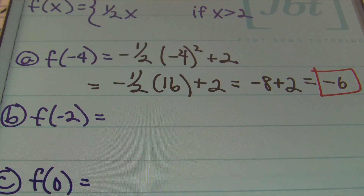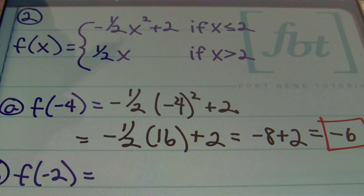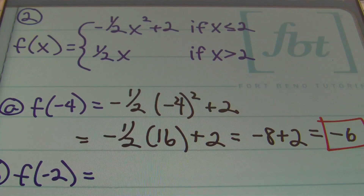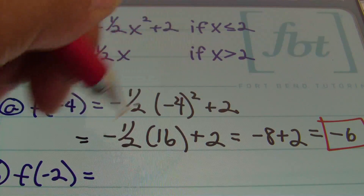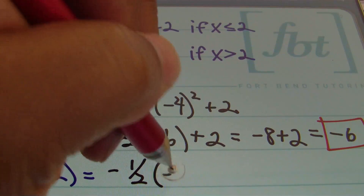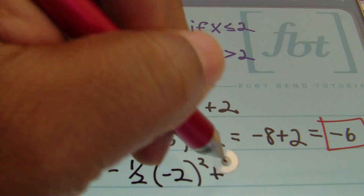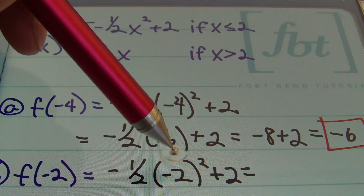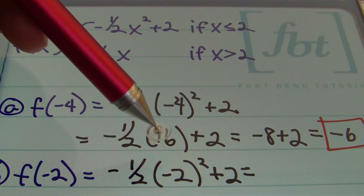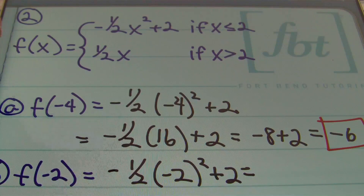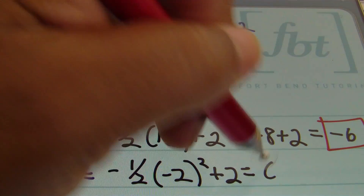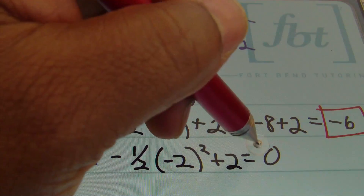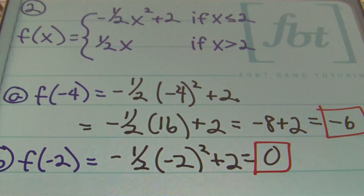For part b, x is negative two. Negative two is less than or equal to two, so we use the first part again. Plugging in: negative one half times negative two squared plus two. Negative two squared is four, negative one half times four is negative two, and negative two plus two equals zero.